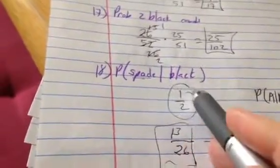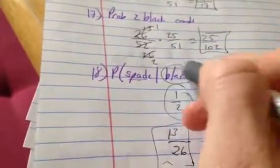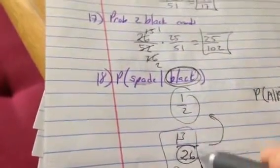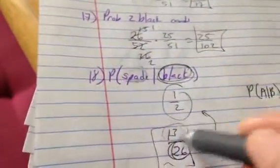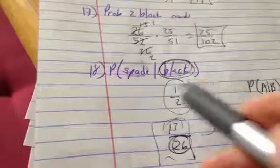This is the way I like to think of these conditional probabilities. I just focus my attention on the given, and that's my denominator. And then look at what I want of those, and that's my numerator. So I look at the black spades, and that's how I get that.